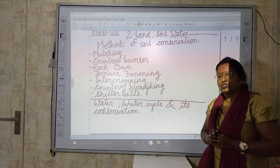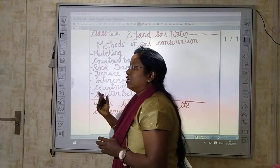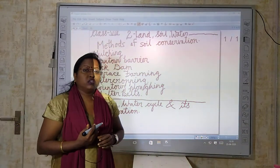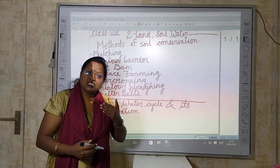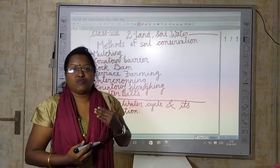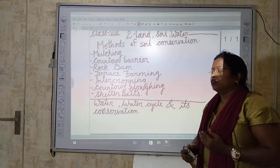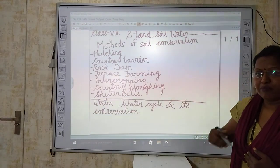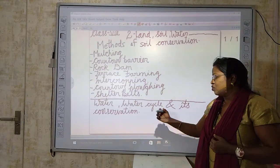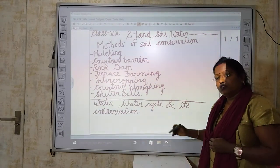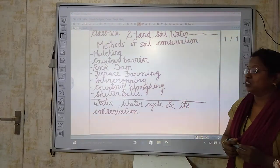Now we move to the next resource, which is water. Water is a very important resource, also called a renewable resource. It is renewable because it gets recharged in the form of rainfall — water from seas, lakes, and oceans evaporates and comes back to earth as rainfall. In this way the water cycle continues and water is renewed.